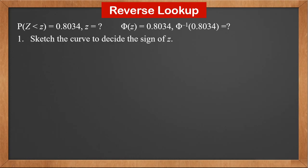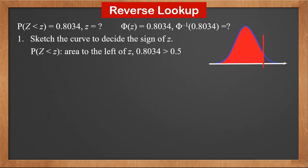First, sketch the curve to decide the sign of z. It's P(Z < z), so it's the area to the left of z. 0.8034 is greater than 0.5, so the sketch should be like this. Therefore, z is a positive value.